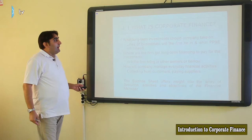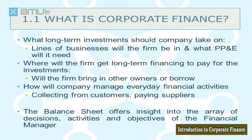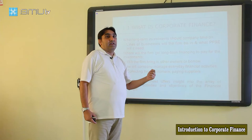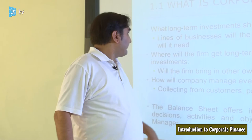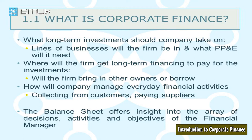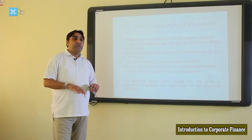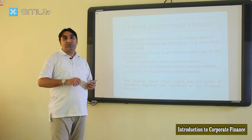To sum up, the functions of financial management are: first, what long-term investment should the company take on? As in the restaurant example, starting your business means making a long-term investment in land, cookware, and others — including what lines of business the firm will be in and what plant, property, and equipment it will need. Second, where will the firm get long-term financing to pay for the investment? You can bring in new owners, issue shares, or go to a bank and borrow money.